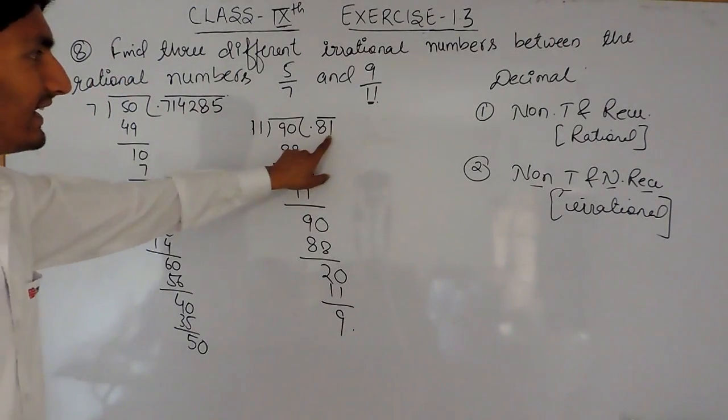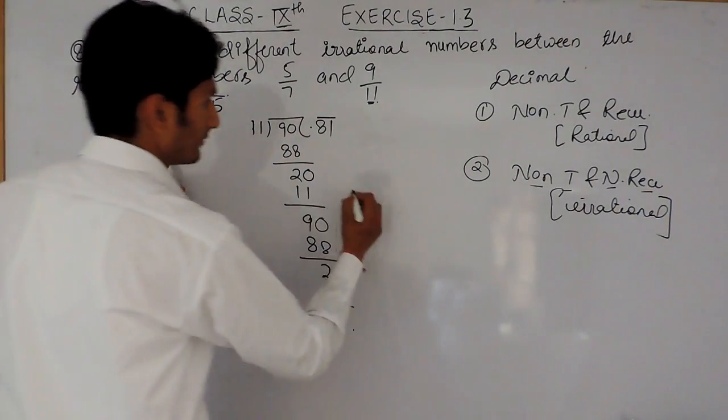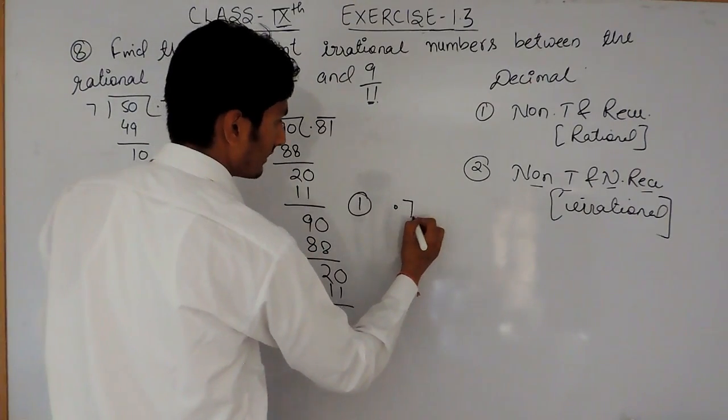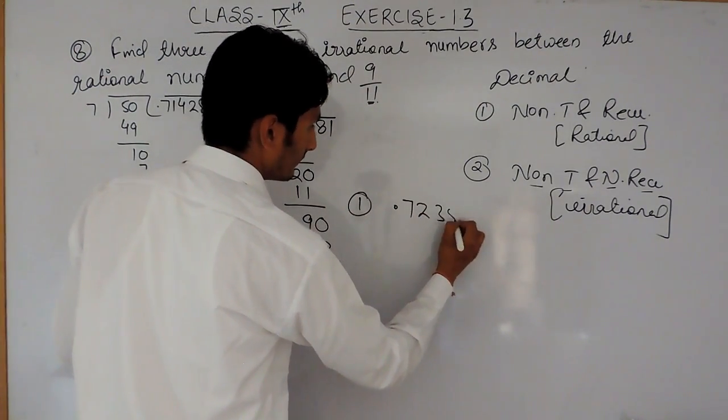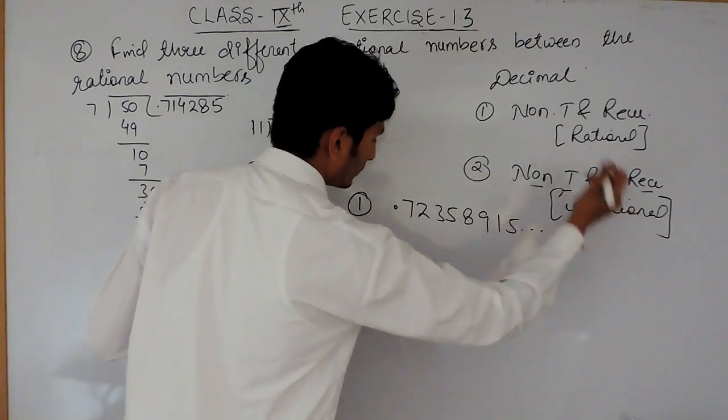Now you have to find numbers between this and this that are non-terminating and non-recurring. Obviously this is 7 and something, this is 8 and something. So the number between this could be 7.235891615 and so on. This will be the first.